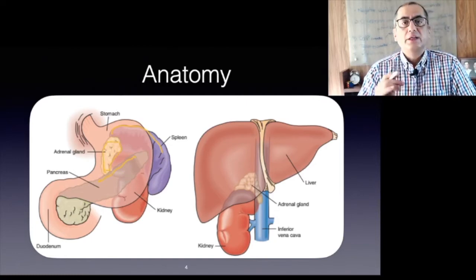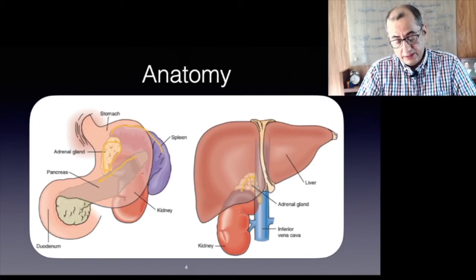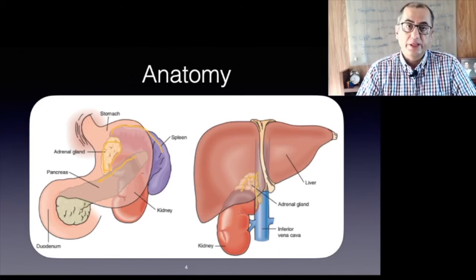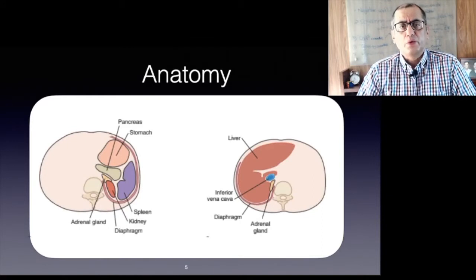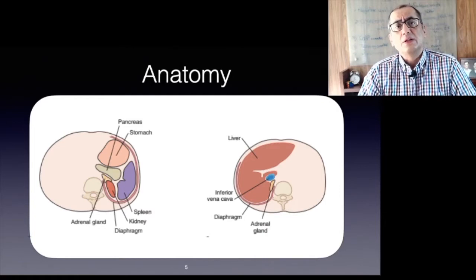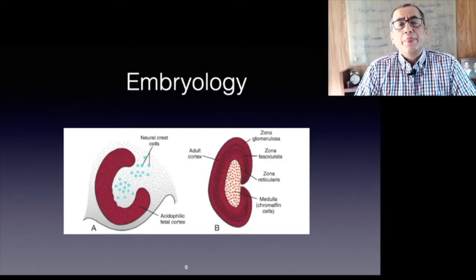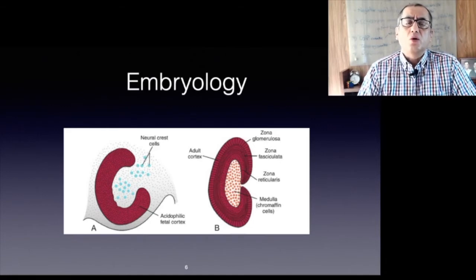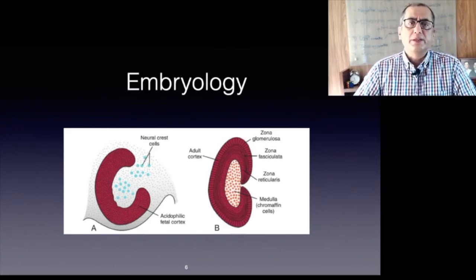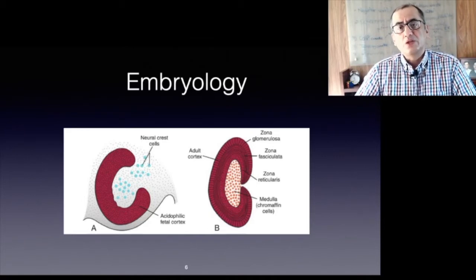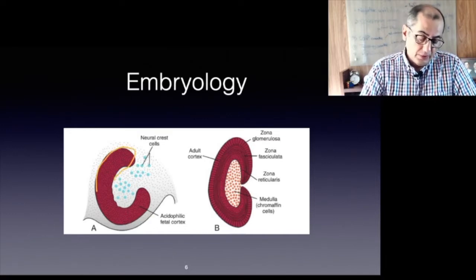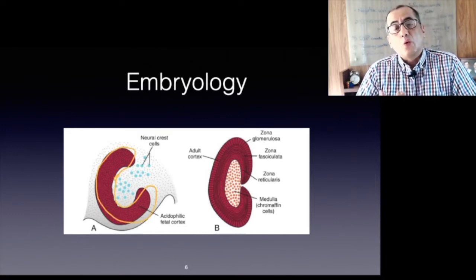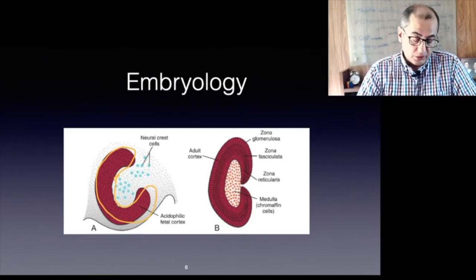Here you can see the right gland right behind the inferior vena cava. This cross-sectional view helps in visualizing the anatomy, which is critical to the surgery of these glands. The adrenal or suprarenal glands are two endocrine organs in one — an outer cortex and an inner medulla — each with distinct embryologic, anatomic, histologic, and secretory features. The cortex forms from mesodermal cells while the medulla forms from neuroectodermal cells, making them two distinct glands.